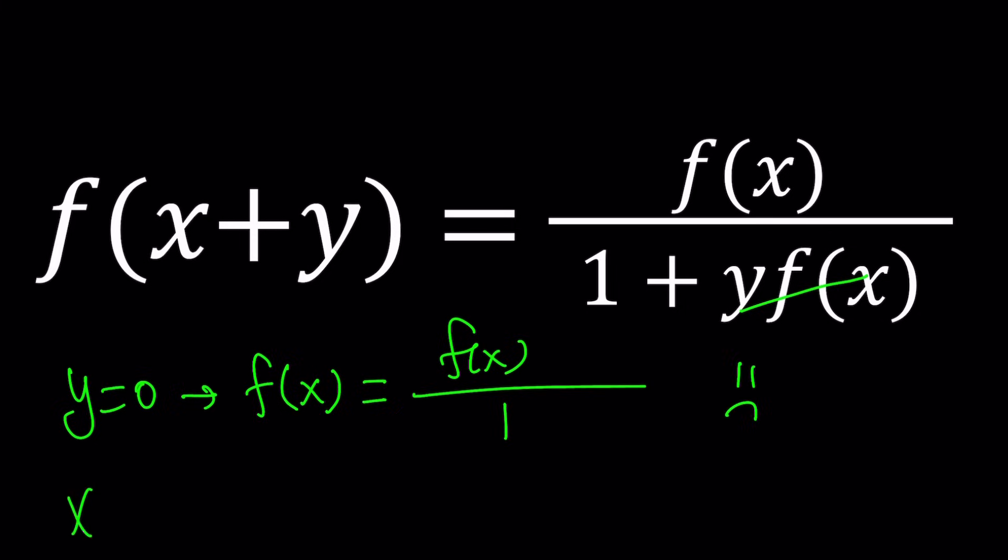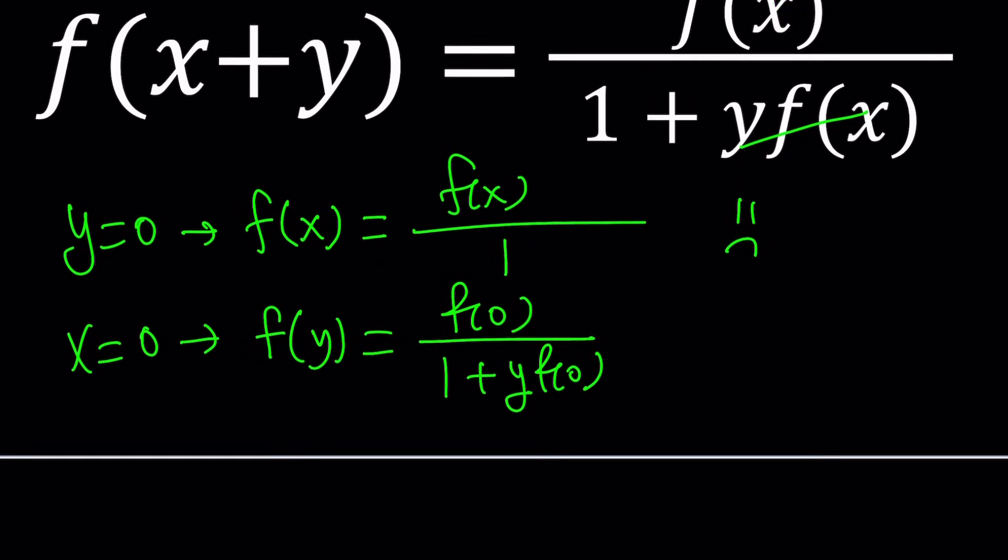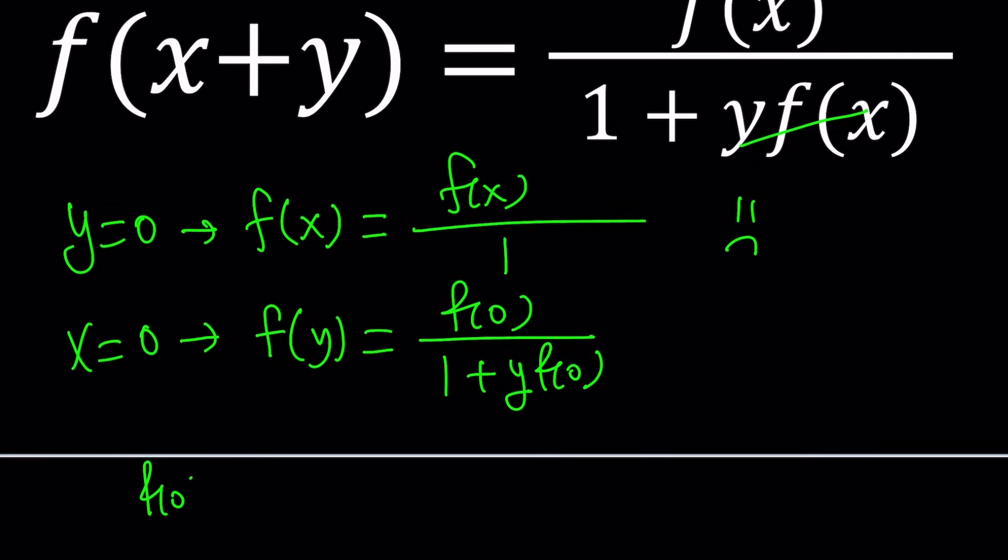Do you think anything would change if you replace x with 0 instead? Yes, because we don't really have that type of symmetry here. As you can see, you can just replace x with y and y with x. Well, you can and you can't. We'll get to that. But let's go ahead and see what happens if we replace x with 0. Then we get f of y plus 0, which is f of y, equals f of 0 divided by 1 plus y times f of 0.